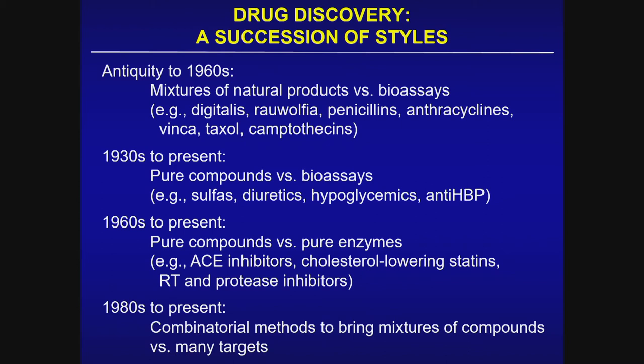From the 1930s to the present, there has been an increasing emphasis on the use of pure compounds or collections of pure compounds, again using a bioassay to define activity in a preclinical sense. Examples include sulfa drugs, many diuretics, first-generation hypoglycemics, and antihypertensive medications. From the 1960s to the present, use of pure compounds against purified enzymes or macromolecules representing the drug target generated ACE inhibitors, cholesterol-lowering statins, and reverse transcriptase and protease inhibitors as anti-HIV agents.